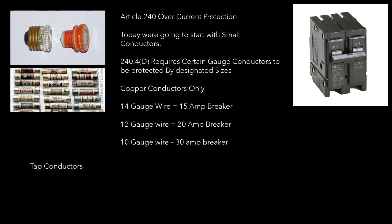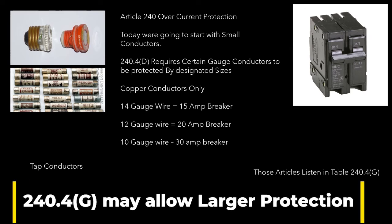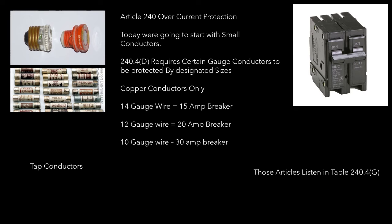Now let's talk about some of those exceptions. Tap conductors are one exception that may or may not allow you to put them on a larger breaker. The other exception is anything listed in Table 240.4(G), which includes air conditioners, motors, and other applications. For those, you go to that specific article and follow that article's prescription for sizing overcurrent protection, which may or may not allow you to go larger than prescribed here. So remember: 14 gauge wire — 15 amp breaker; 12 gauge wire — 20 amp breaker; 10 gauge wire — 30 amp breaker.